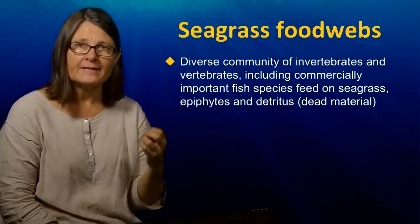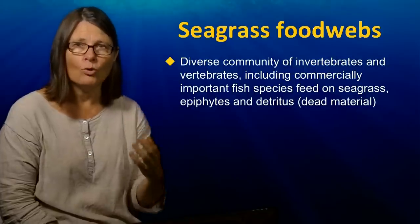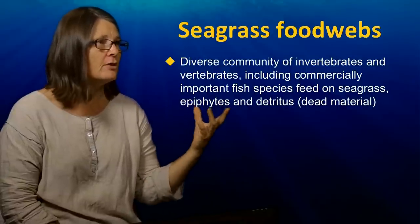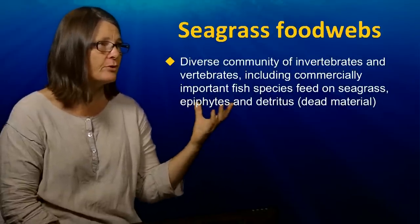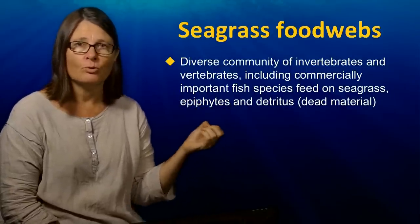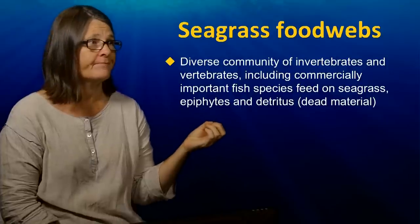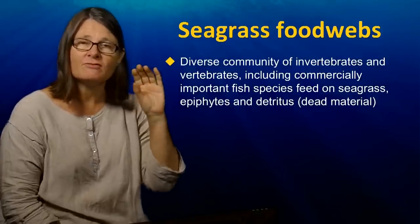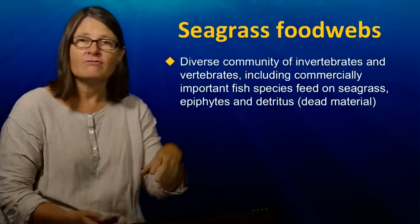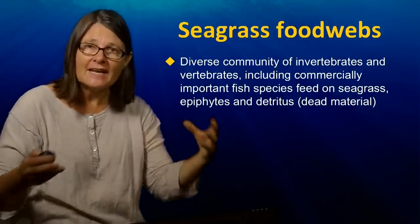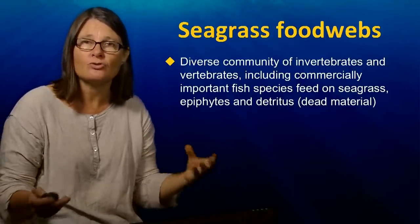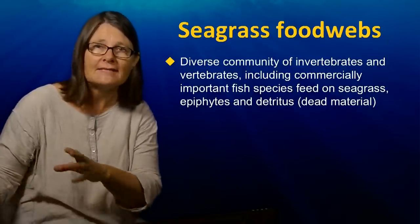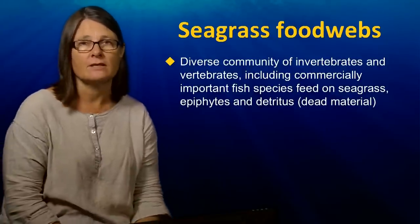Seagrass fall at the base of some extremely important food webs. They support a diverse community of invertebrates and vertebrates, including commercially important fish species. These organisms tend to feed directly on the seagrass, on dead matter associated with seagrass which we call detritus, and also on algae and microalgae that occur within the seagrass beds.